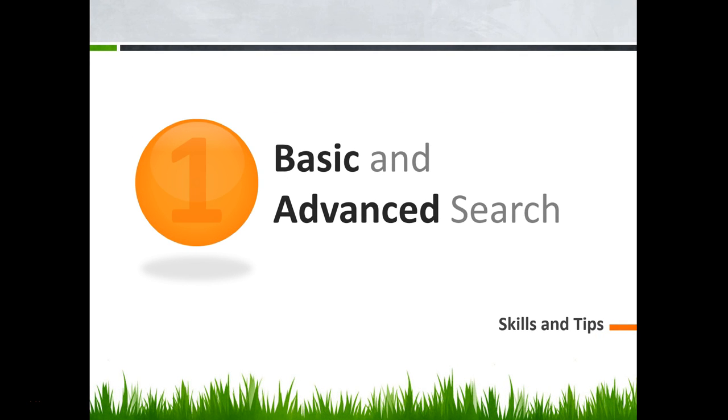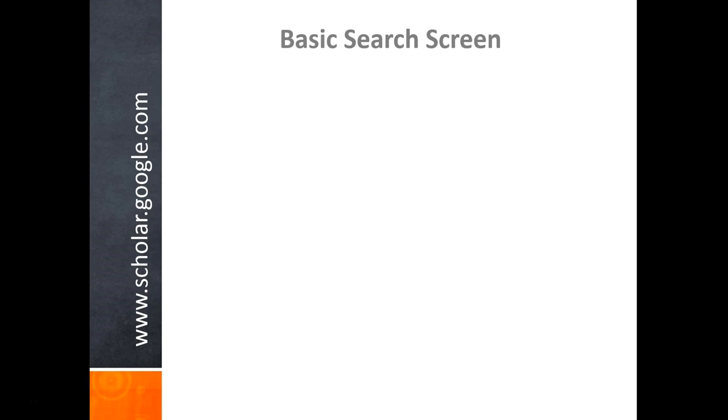To access Google Scholar, either type the address into the web address bar, www.scholar.google.com, or simply Google "Google Scholar." It will be the first result.